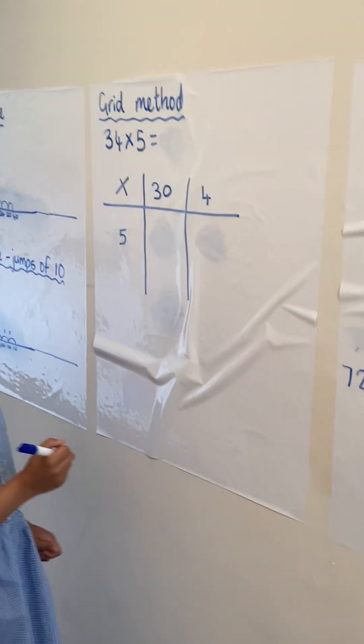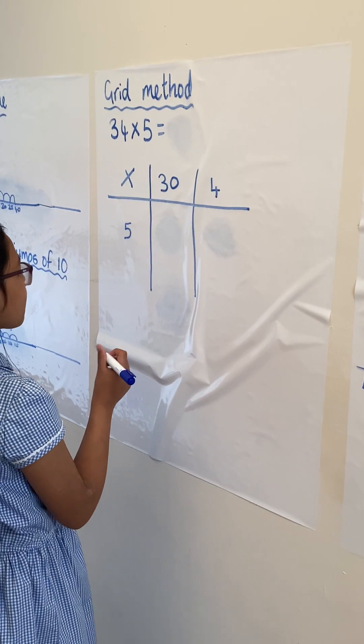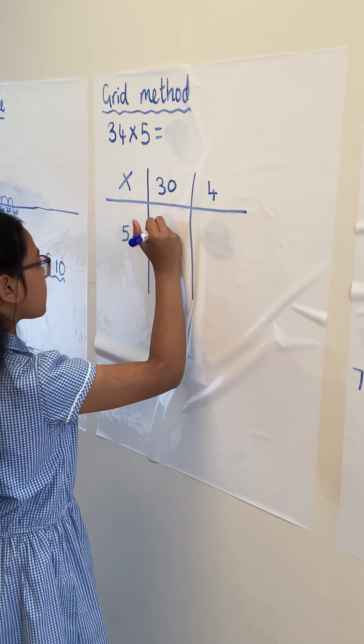And then you have to move on to quick methods, so we've got 34 times 5. We've partitioned the 34 into 3 tens and 4 ones, and then we're multiplying by 5.